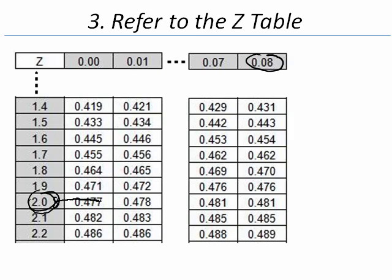We go ahead along the 2.0 row. We go down the .08 column. And right here is the proportion between our mean and our z of 2.08.